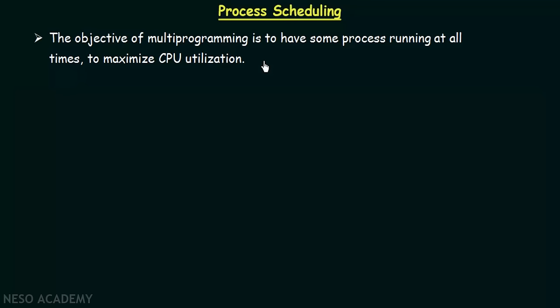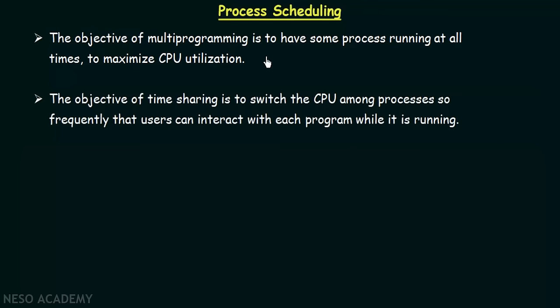You may ask how this is related to process scheduling — we will come to that as we move ahead. The next thing we will be talking about is timesharing. The objective of timesharing is to switch the CPU among processes so frequently that users can interact with each program while it is running. Timesharing is also something we have already talked about in the beginning of this lecture series.